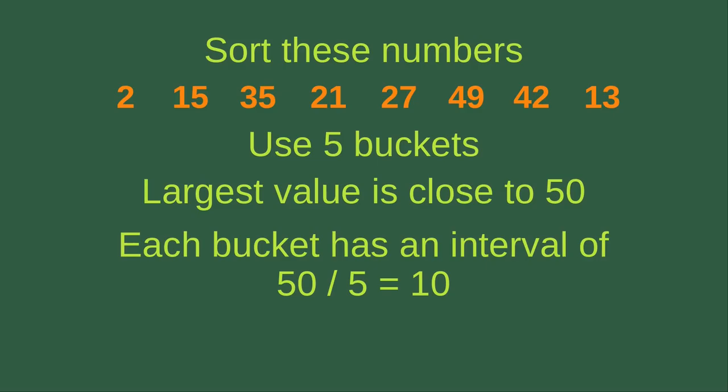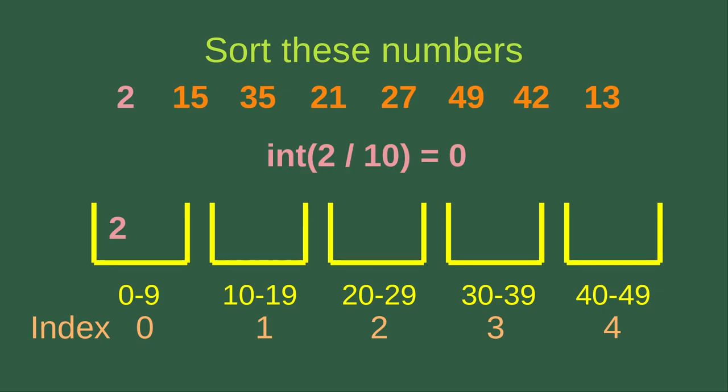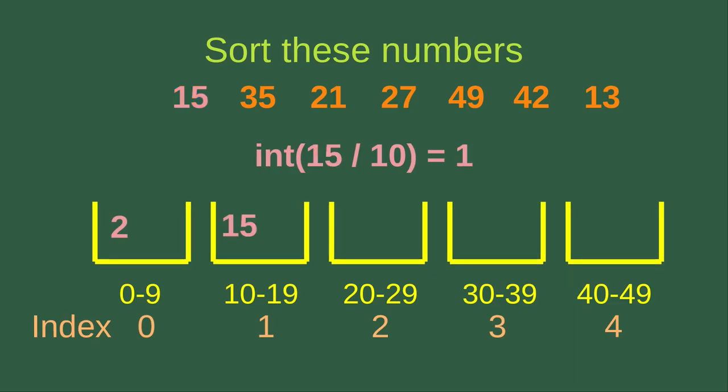Now we have 5 buckets, each with an interval of 10, with indices 0 to 4. Let's see how we put numbers into each bucket. For the first element, to determine the bucket index we divide the element by the interval size and take the integer part. So 2 divided by 10 is 0.2, and the integer part is 0 — so the value 2 goes into bucket index 0.